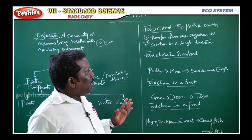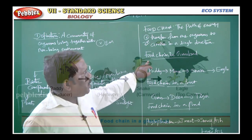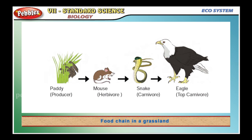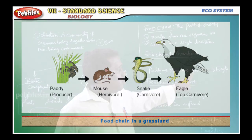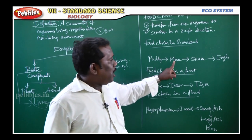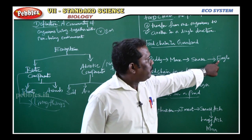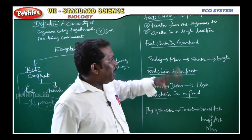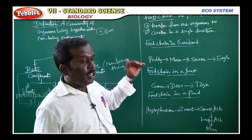The definition of food chain is: the path of energy transfer from one organism to another in a single direction. There are various food chains. Example — food chain in grassland: paddy (plant) is the producer. Mouse is the food of the snake — snake catches mouse and gets energy. Eagle then gets energy from the snake. This is the grassland food chain.